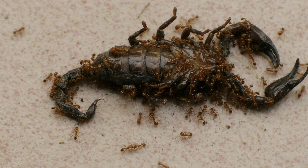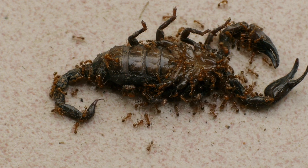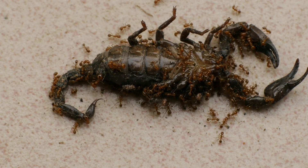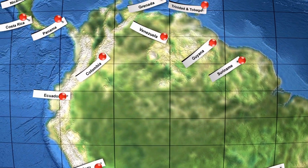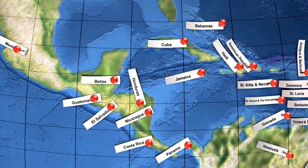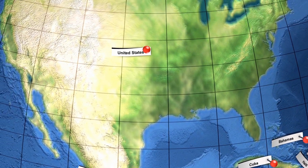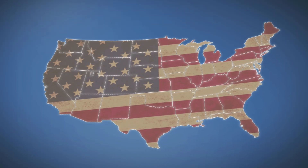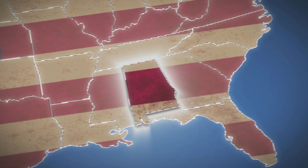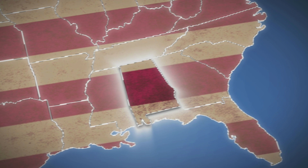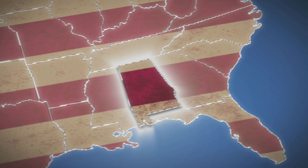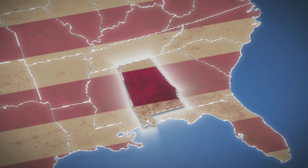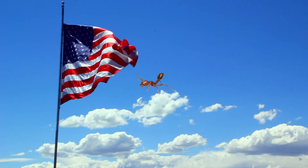Solenopsis invicta, the red imported fire ant, is so infamous for its expansion through human trade, its very description states the word imported. Traveling from its native lands in South America, in the Pantanal region along the Paraguay river, a highly invasive species now found in several countries around the world, including China, Australia, New Zealand, the Caribbean, and arriving in Alabama in the US during World War II between 1933 and 1945 through trade with Argentina. Since this introduction they now span 13 states and occupy 128 million hectares of land.